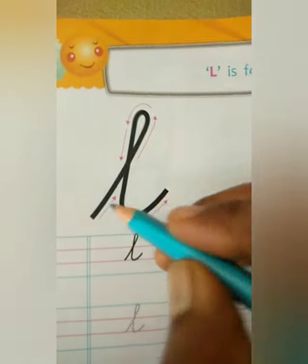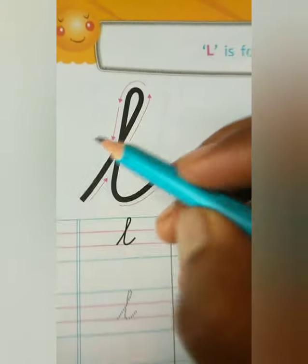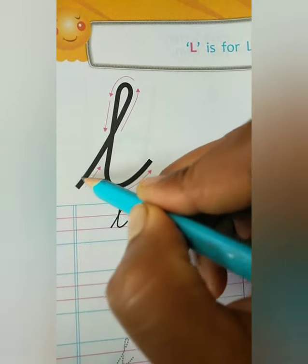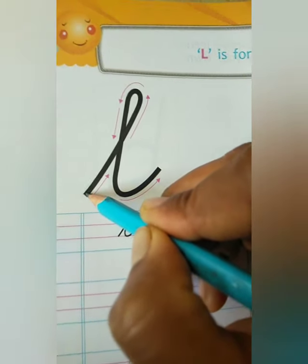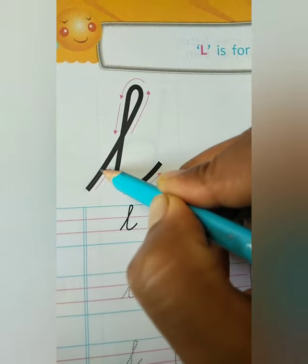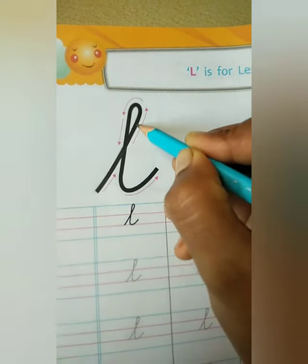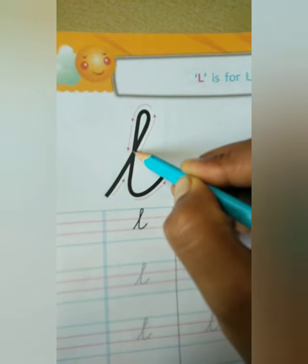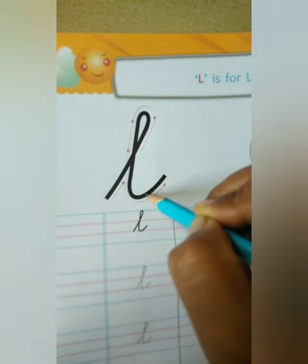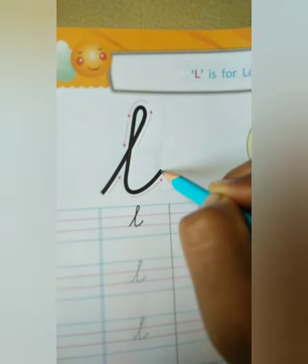Small cursive L will be G, D, or L. Start from here, go to upside, curve, left side, then downside and right side, curve.